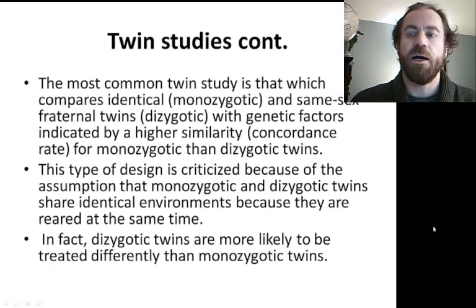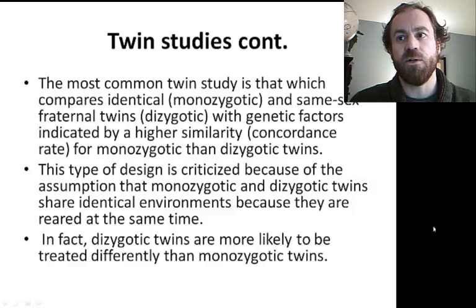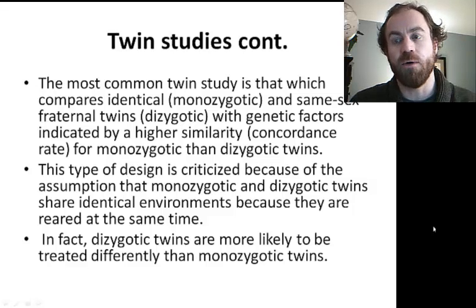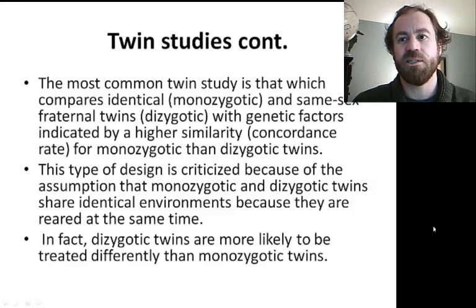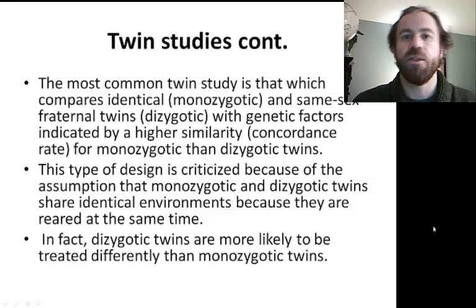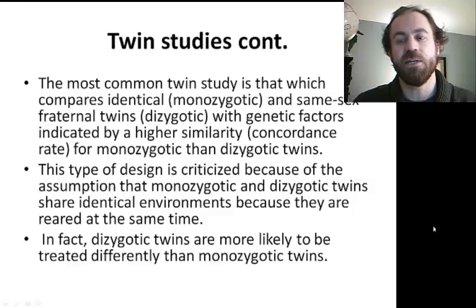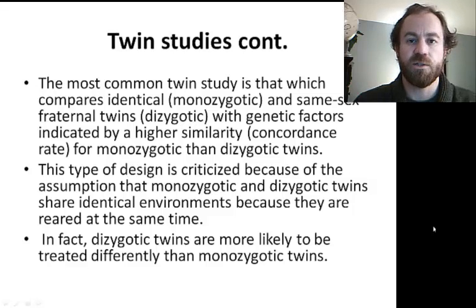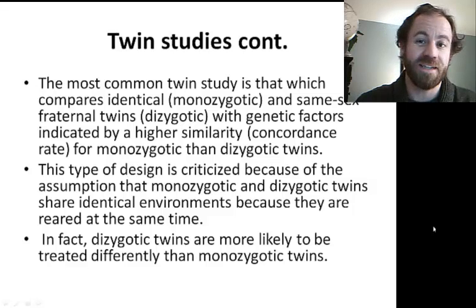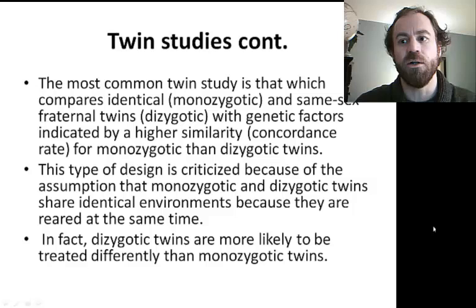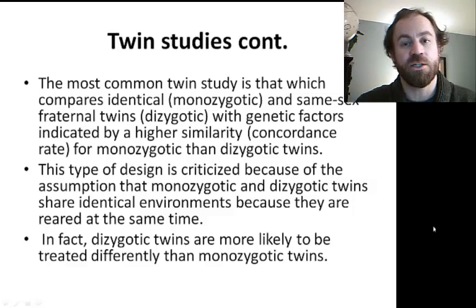Another common twin study type compares identical and same-sex fraternal twins, with genetic factors indicated by higher similarity for identical twins over fraternal twins. This design is criticized because of the assumption that identical twins and fraternal twins both share identical environments since they are reared at the same time — when in fact that's not always true. Fraternal twins are often more likely to be treated differently than identical twins, since they can be different genders, often look at least slightly different, and are known to be non-identical, so parents and relatives will tend to look for differences between them, highlight these differences, and thereby affect the children's development.